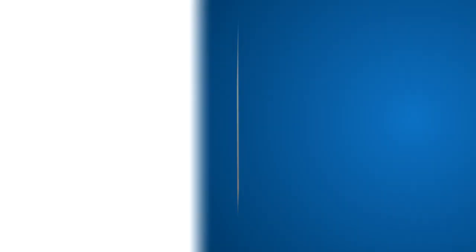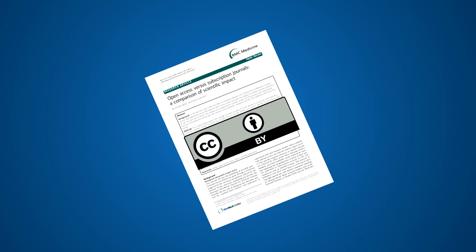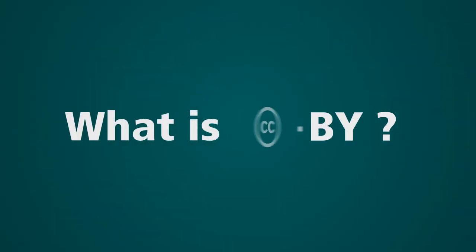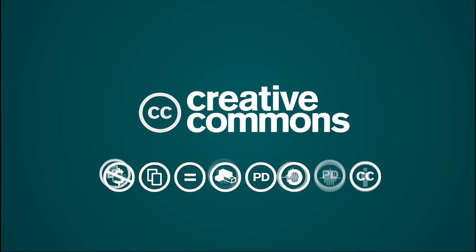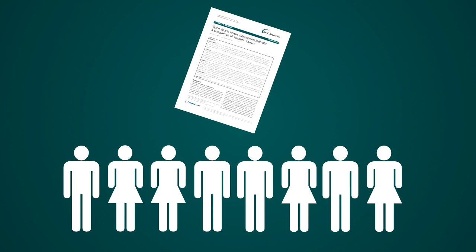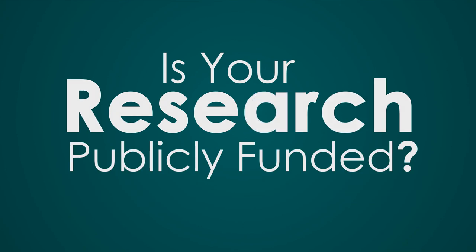If RCUK is funding your research, it must be unrestricted, which means using a CC BY licence. CC BY is a Creative Commons licence that allows full use and reuse rights to everyone, as long as the work is attributed to the original authors. And from the 1st of April, we will be expecting researchers to move towards compliance with the policy on open access.